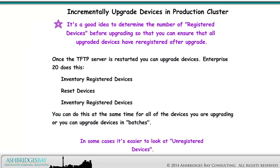It's a good idea to determine the number of registered devices before upgrading so that you can ensure all upgraded devices have re-registered after the upgrade. Once the TFTP server is restarted, you can upgrade devices. Enterprise 20 does this: inventory registered devices, reset devices, inventory registered devices again, and check to see that everything re-registered. You can do this at the same time for all of the devices you are upgrading.